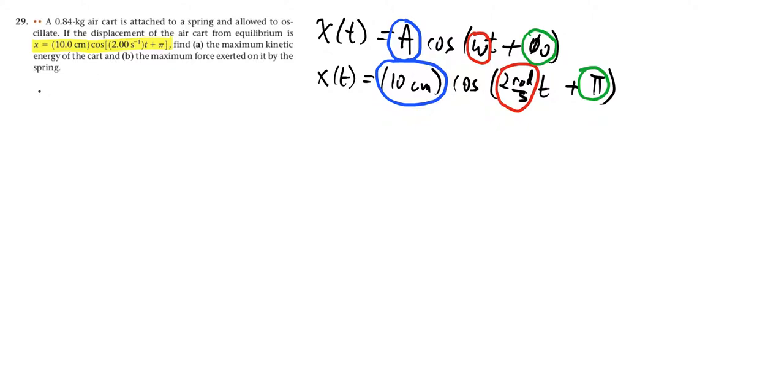To figure out the maximum kinetic energy of the cart, I'm just going to say that is one-half m times the maximum speed, so one-half m v max squared. This will be when it's going through equilibrium, its speed will be at a maximum.